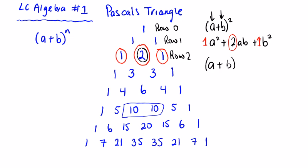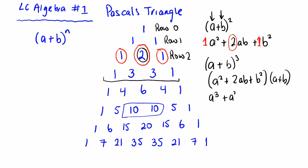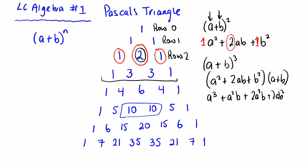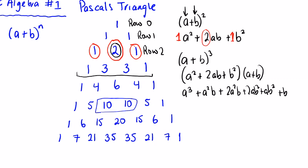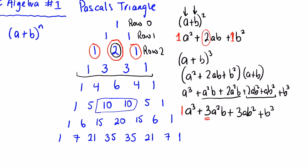For (a + b)³, we're looking at row 3. It's (a + b)(a + b)(a + b), which is the previous answer (a² + 2ab + b²) times (a + b). Multiplying out gives a³ + a²b + 2a²b + 2ab² + b³. Collecting like terms: a³ + 3a²b + 3ab² + b³. The coefficients are 1, 3, 3, 1 — and you can see that is row 3 of Pascal's Triangle.